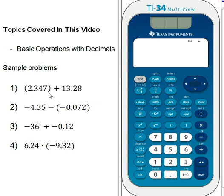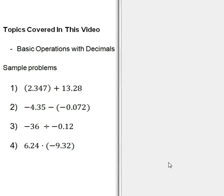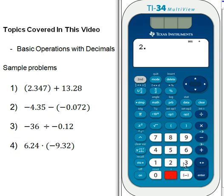So if we look at this first sample problem, it says 2.347 plus 13.28. And we basically enter it into the calculator exactly as it appears. We could use our parentheses, it won't change our answer, but it's more efficient if we just drop those parentheses. So 2.347 and then plus 13 and then 0.28. And then we hit enter to get our answer, and it tells us that the answer is 15.627.